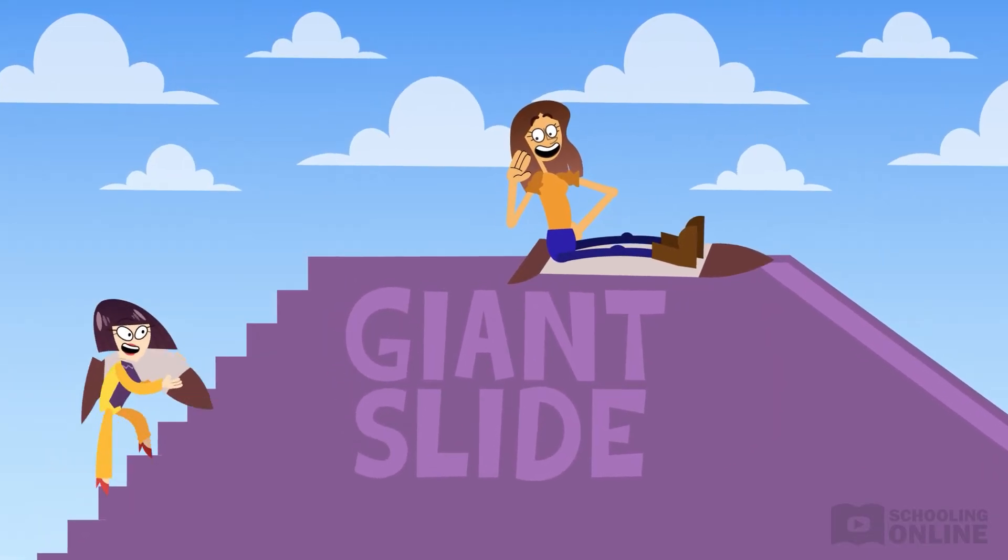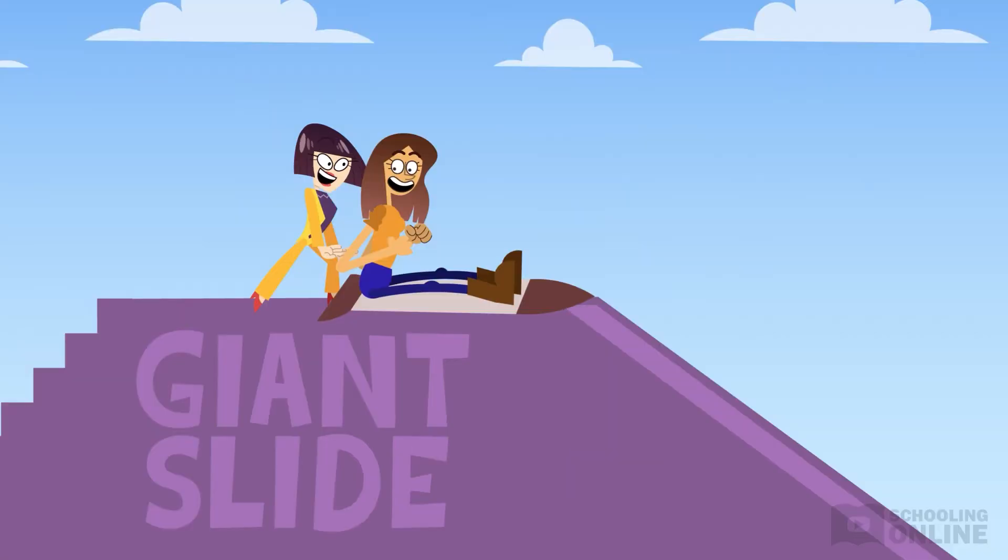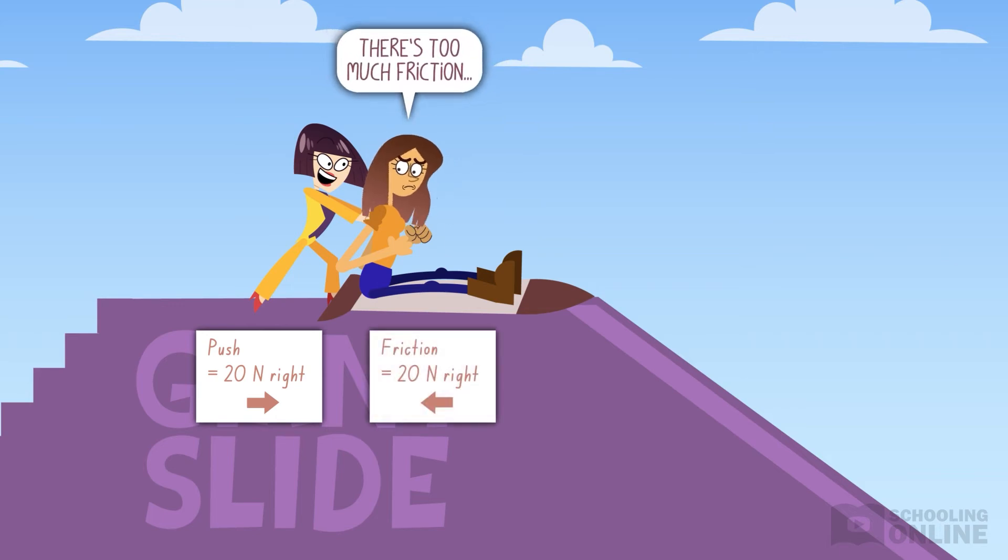Brooke, who is already at the top, urges Lotus to hurry up and give her a boost. Lotus provides a gentle push of 20 Newtons right, but Brooke doesn't move because there is too much friction between the rug and slide.